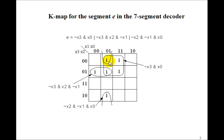This one is just going to be not x3 and x0. This one is going to be not x3 and x2 and not x1. And then the wraparound one here is going to be not x2 and not x1 and x0. So here's the logic equation then for e.